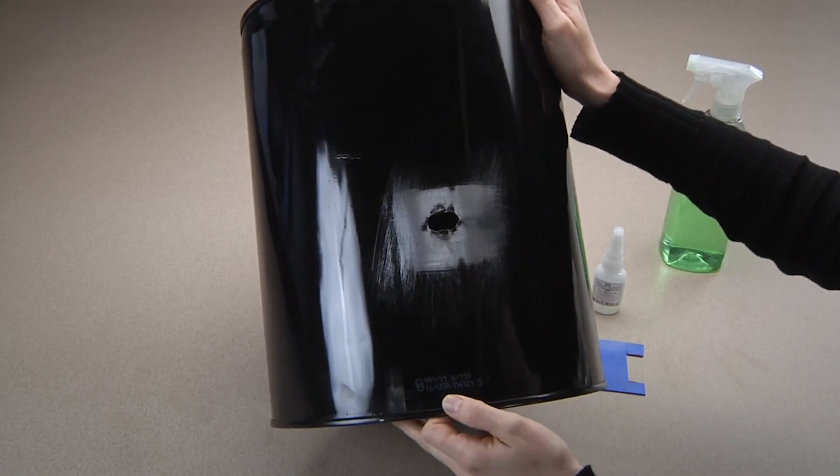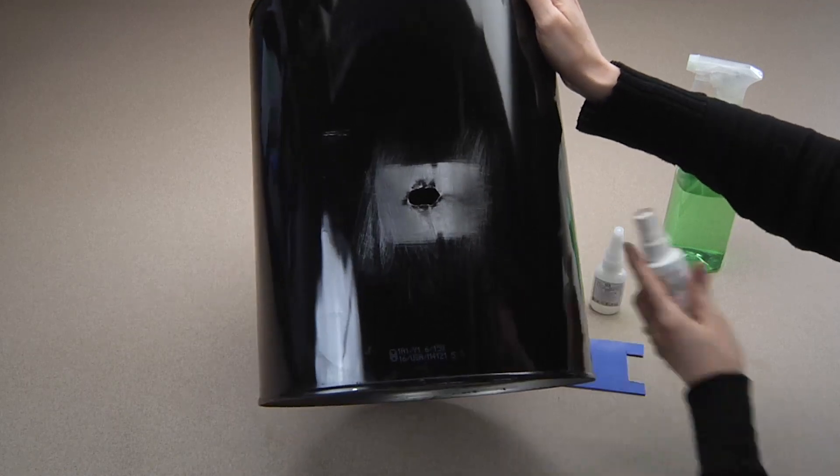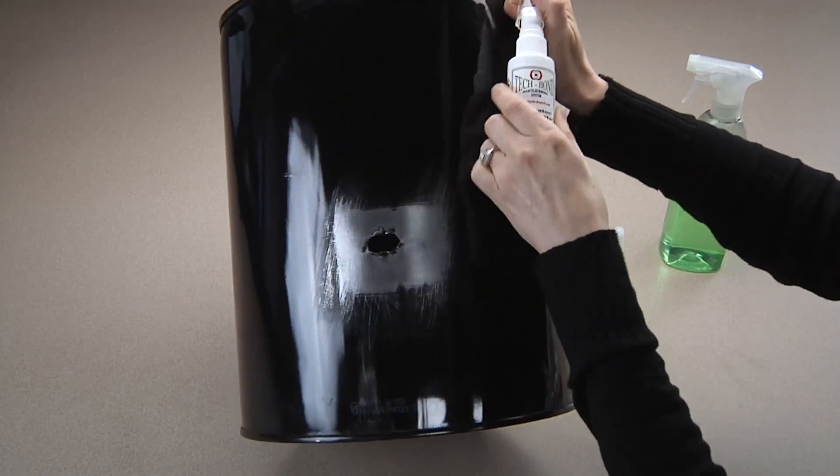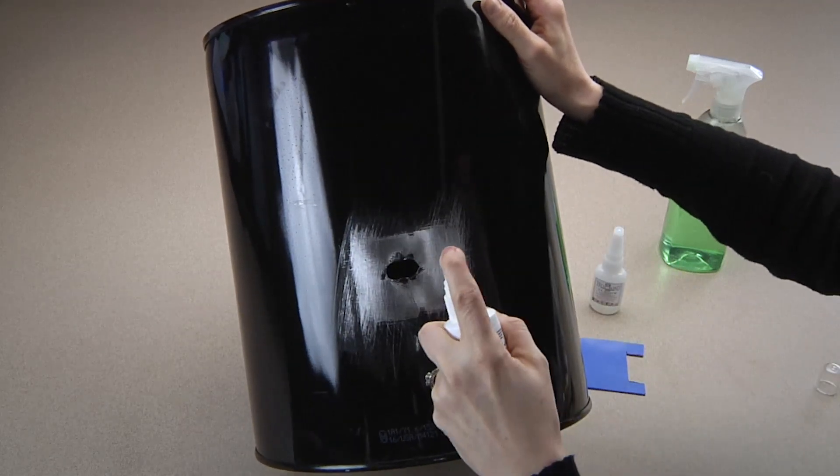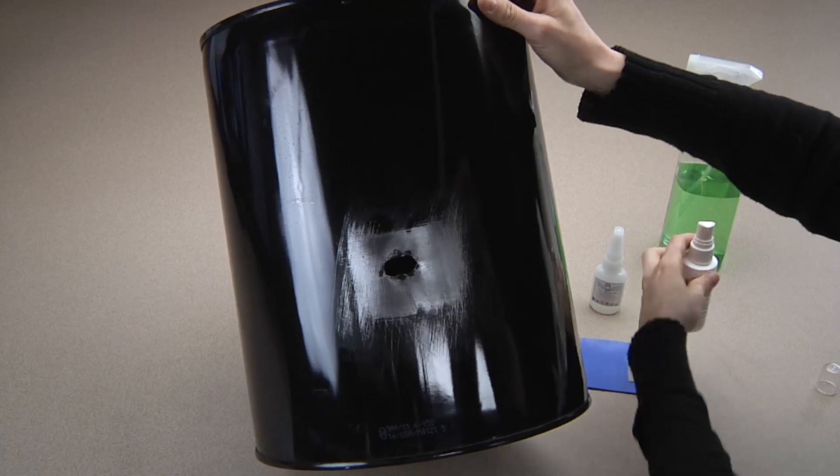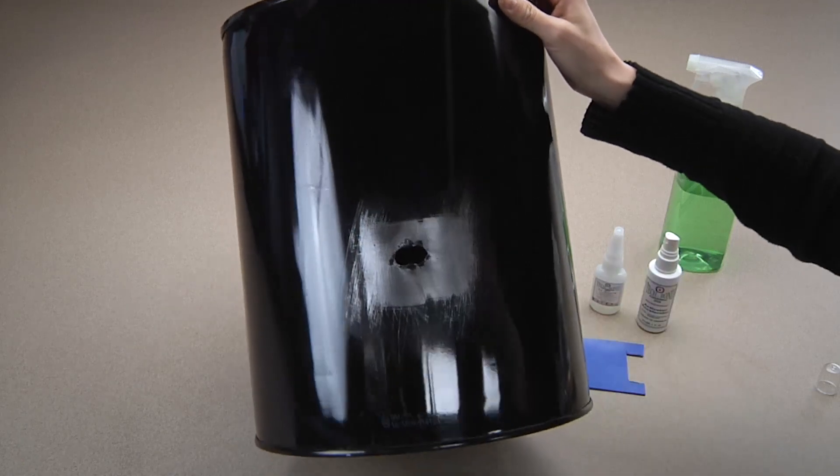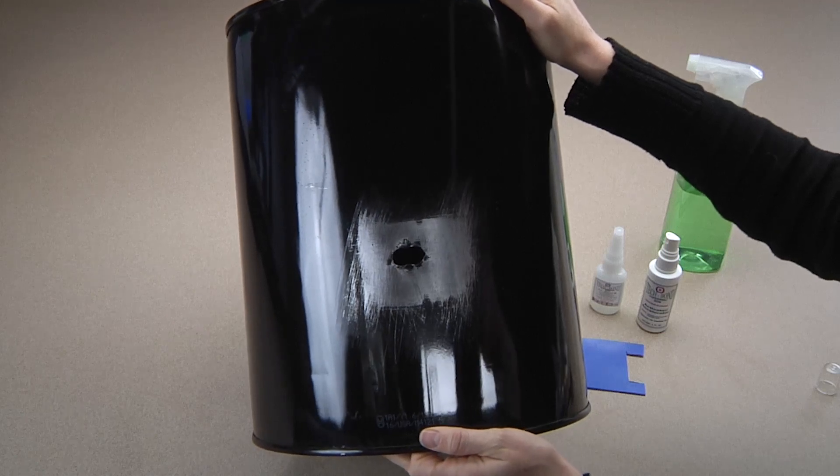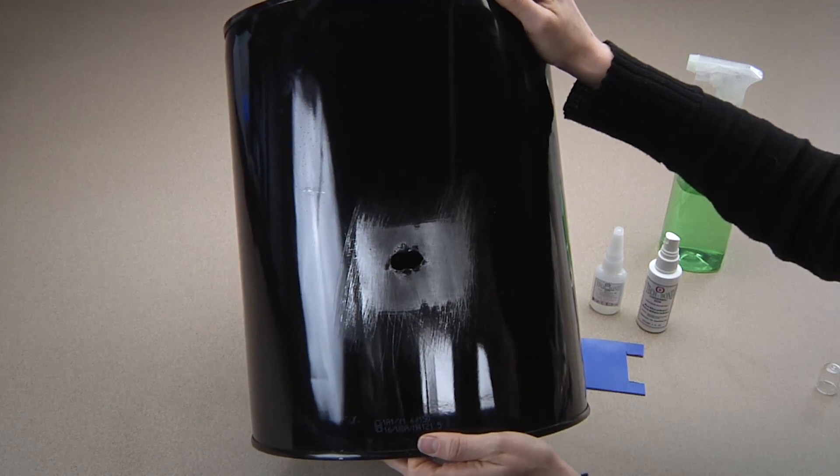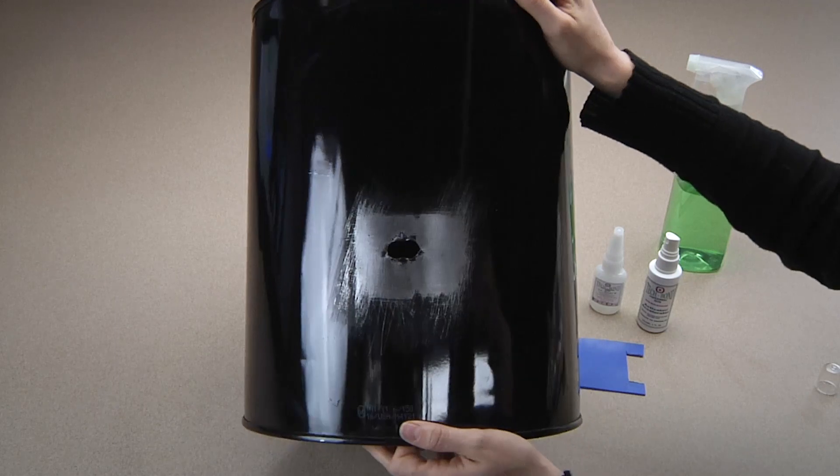Now, we will spray the surrounding area of the hole with our activator accelerator. What we are doing is preparing the surface so we can put our silicone S patch on it. Once we have sprayed our activator accelerator, you have about half an hour of work time. Make sure you let that dry completely.